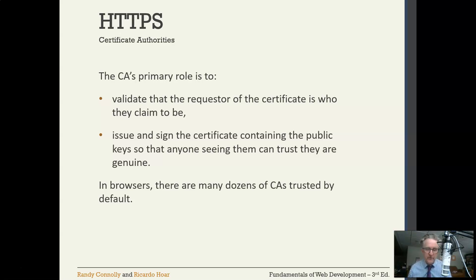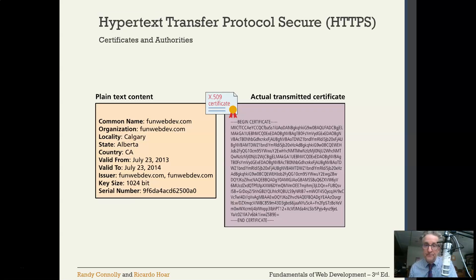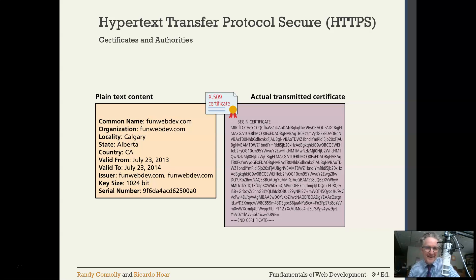In your browser there are many dozens of CAs that are trusted by default. Part of the certificate is just plain text, including information potentially about the certificate's organization and where they're from, as well as some validation dates. There's also a part where the actual public key is. This uses something called SHA-256 — that is the hash of that key.